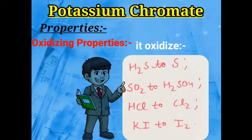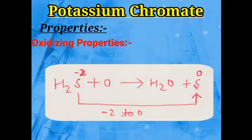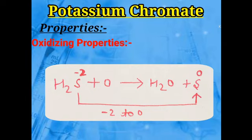To understand how these oxidations occur: in the first reaction, H₂S gas reacts with oxygen to give H₂O and sulfur. In H₂S, the oxidation state of sulfur is −2, but in the product sulfur (alone), the oxidation state becomes 0. So sulfur's oxidation state increased from −2 to 0 — oxidation occurred — with the help of oxygen from potassium chromate.